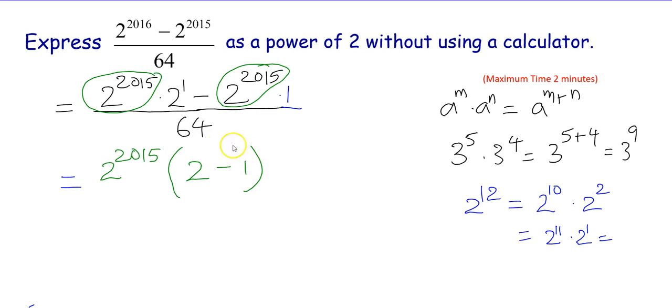That gives you 2 to the power of 2015. Take it out as common factor, leaving behind 2 in this first term minus 1. And in the denominator, continue with 64.